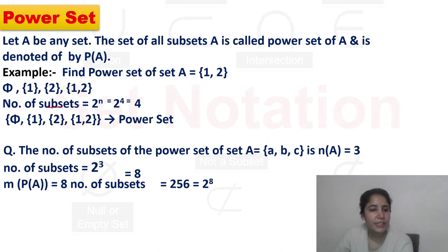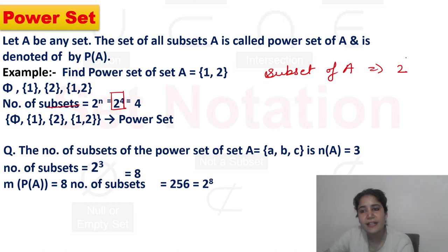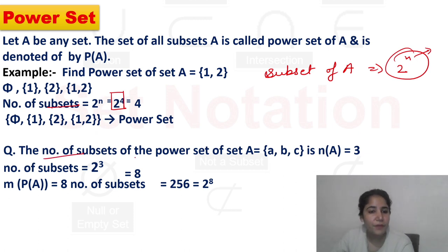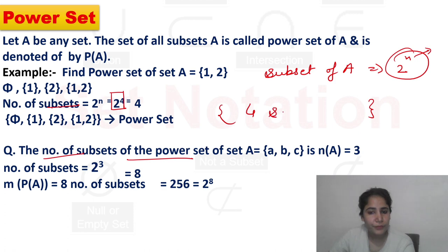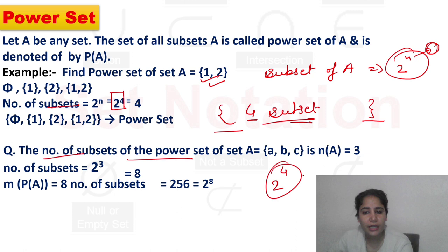Number of subsets कितने देखने को मिलेंगे — power set के। अगर आपको किसी set के subsets निकालने हैं तो formula है 2 to the power n, जहाँ n = number of elements है। लेकिन अगर आपसे number of subsets of the power set पूछा जाए — तो power set में four subsets हैं मतलब उसमें four elements हैं। तो formula में number of elements = 4 रखेंगे, तो 2 to the power 4 = 16 देखने को मिलेंगे।